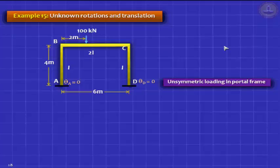Now we look at a more difficult problem. When you have sway in portal frames, you have sway when you do not have symmetry. Not only the frame should be symmetrical — both columns must have the same I — but the loading should also be symmetric. If this 100 kilonewton load was off-center, now it is going to sway.